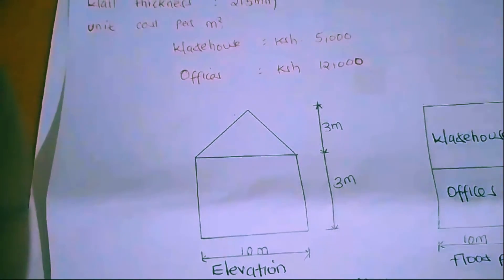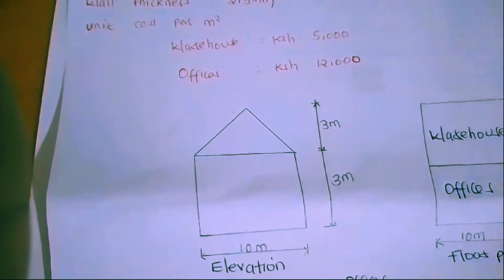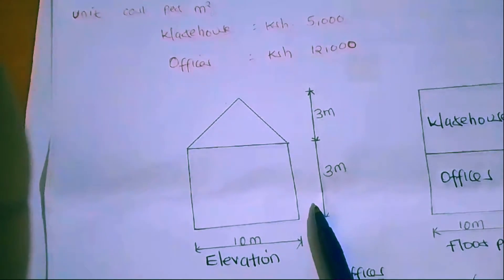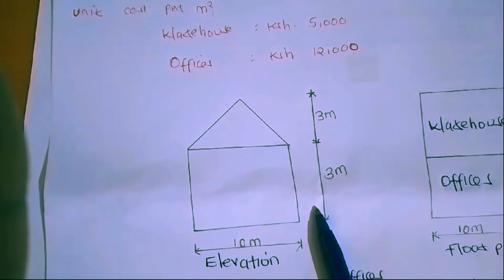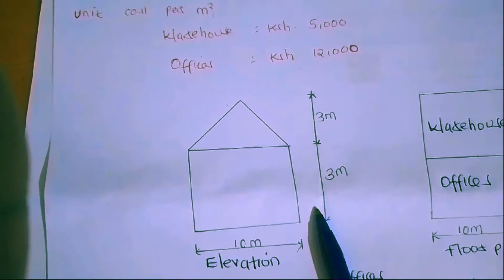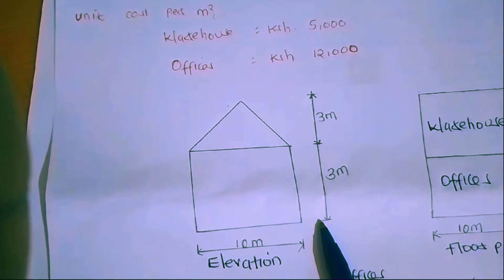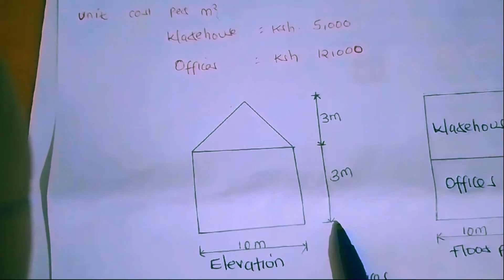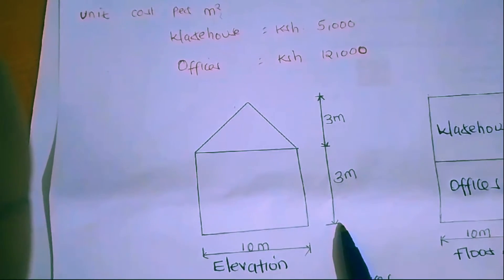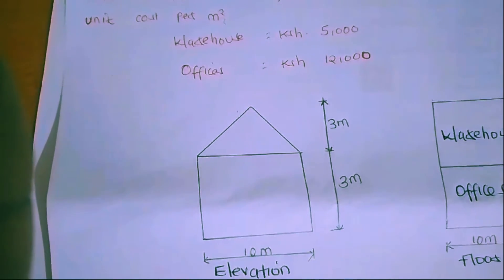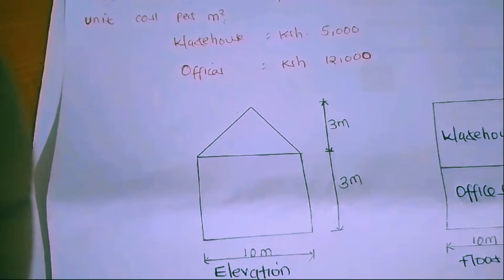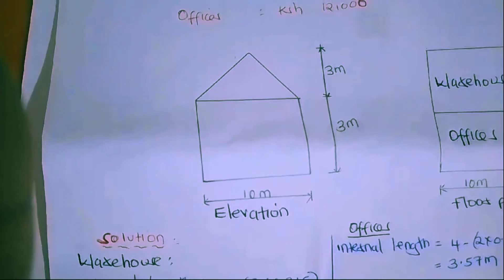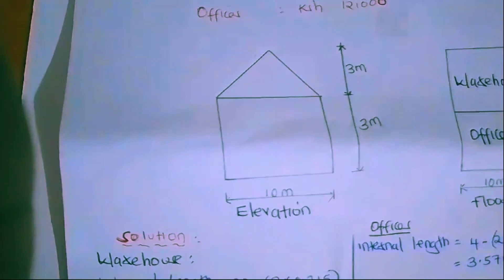We are not using cubic meters, so don't let that confuse you. Remember, we have different methods of approximation: we have the cubic method, the storey enclosure method, approximate quantities, the functional unit method, and then we have this superficial method. Now let's look at what we need.